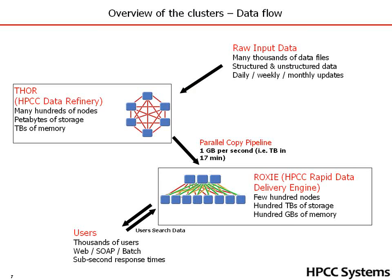Here's the data flow of HPCC. We take raw input data from multiple sources — structured and unstructured — in daily, weekly, and monthly updates. We pass it to Thor, the data refinery, which in our own systems typically has 400 nodes, giving us petabytes of storage and terabytes of memory. After the data has been processed and is ready for use, we use a parallel copy pipeline to transfer the information to Roxy. Roxy has a few hundred nodes, typically a hundred-node cluster, with hundreds of terabytes of storage.